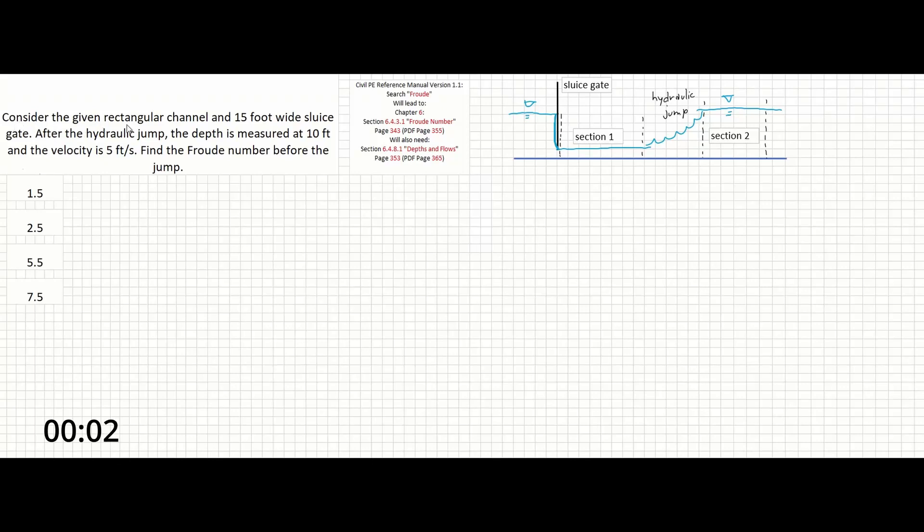Consider the given rectangular channel and 15 foot wide sluice gate. After the hydraulic jump, the depth is measured at 10 feet and the velocity is at 5 feet per second. Find the Froude number before the jump.